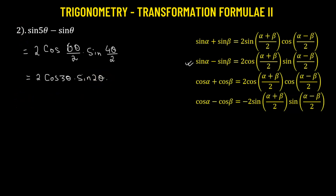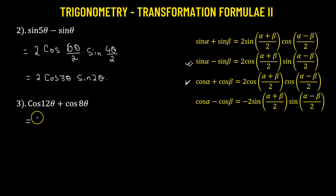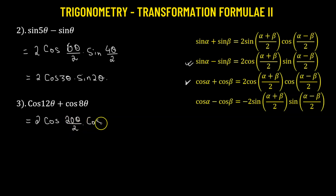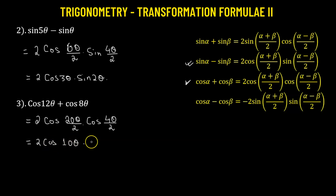Moving on to the third problem, we have cosine 12θ plus cosine 8θ. That means we have the sum of two cosine functions, which can be expressed as a product of two cosine functions. This equals 2 times cosine of (12θ + 8θ)/2, which is 20θ/2, multiplied by cosine of (12θ − 8θ)/2, giving us 2 times cosine 10θ times cosine 2θ.